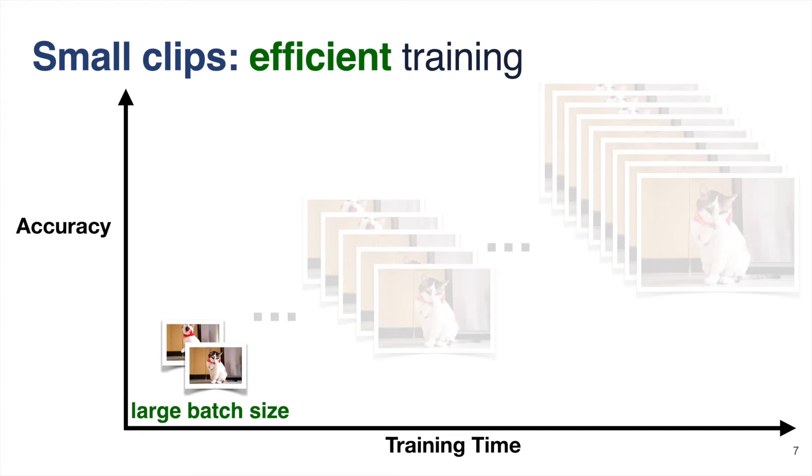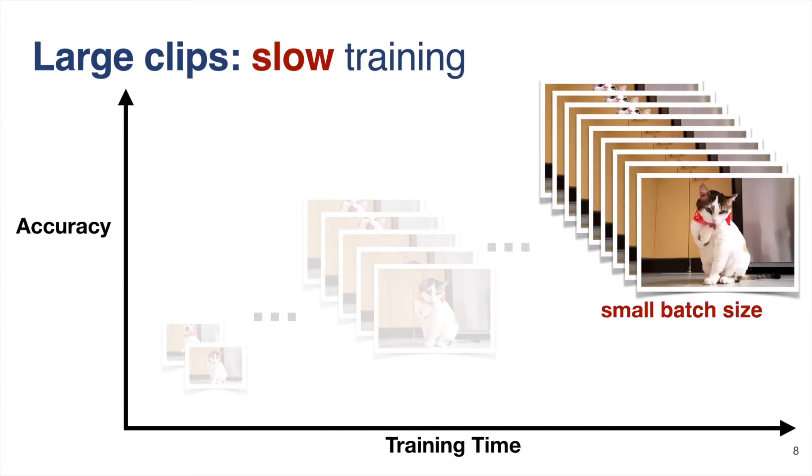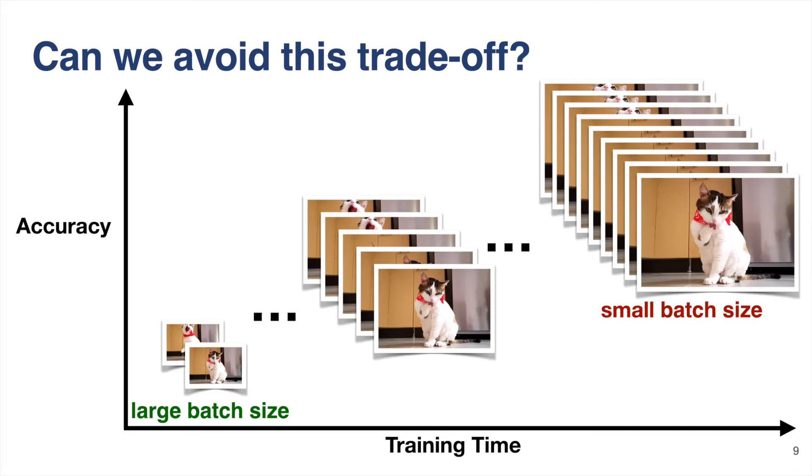However, the accuracy of the resulting model is often lower. If we use larger clips, the accuracy of the resulting model could be higher, but training is slower. How do we avoid this trade-off and train accurate video models efficiently?